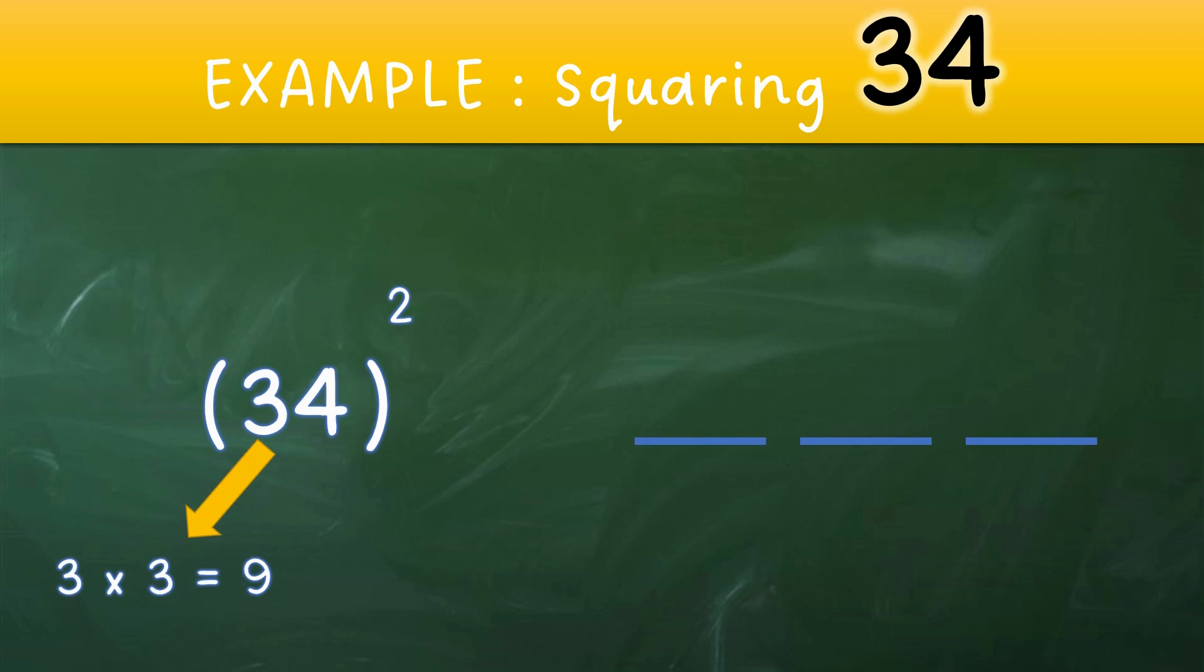Taking square of 3 will make 3 x 3 equaling 9, so we will put 9 on the left side. Step 2: taking the square of the right digit, that's 4. 4 x 4 equaling 16, so we will put 16 in the right side.